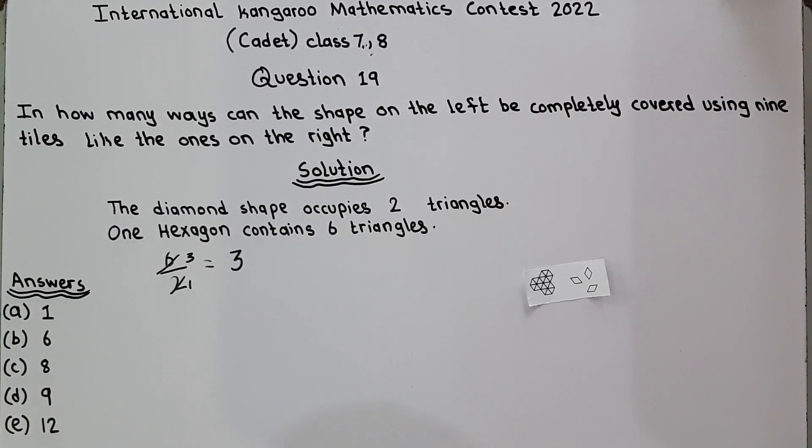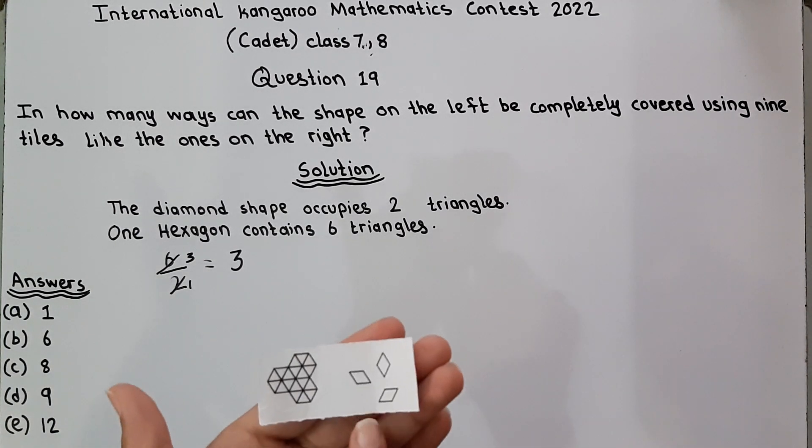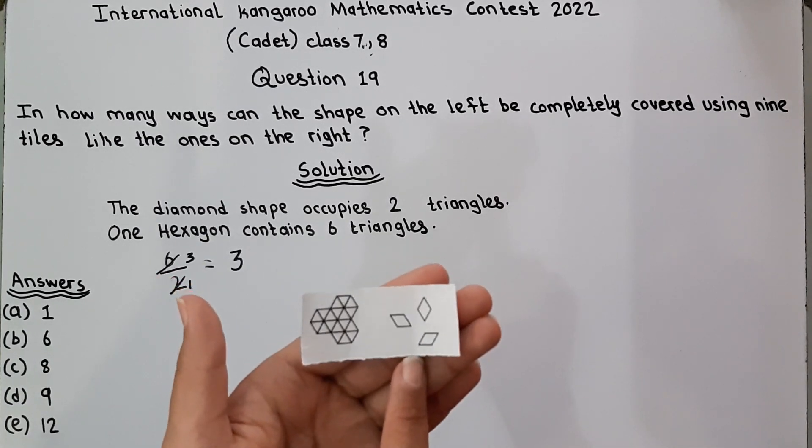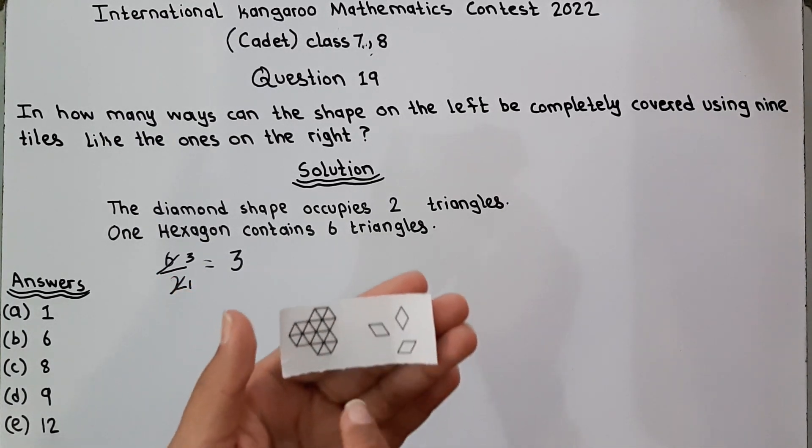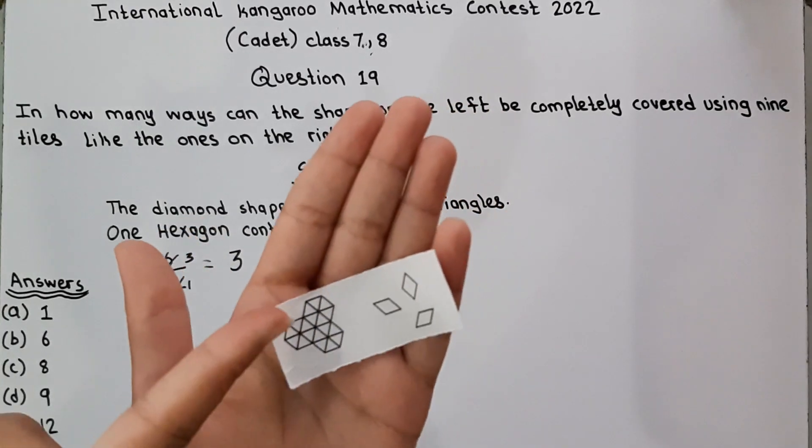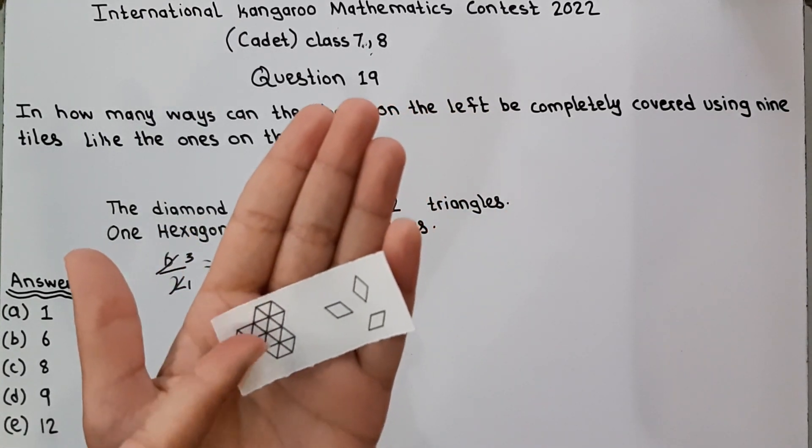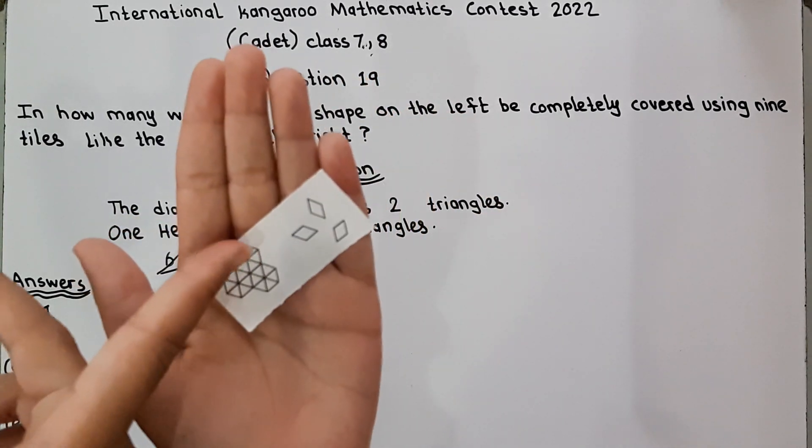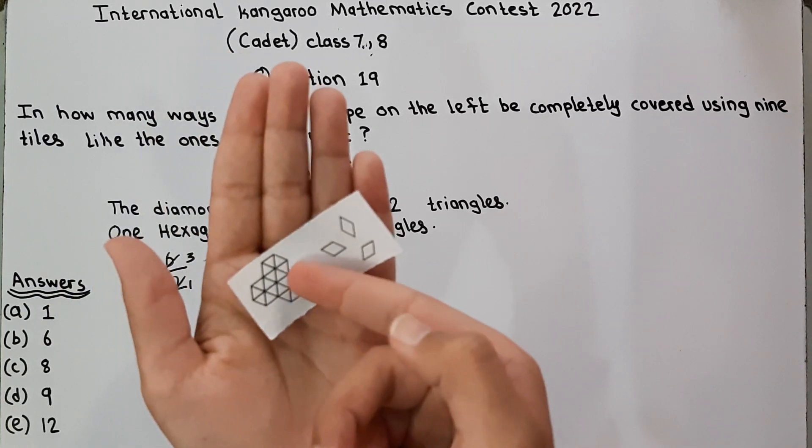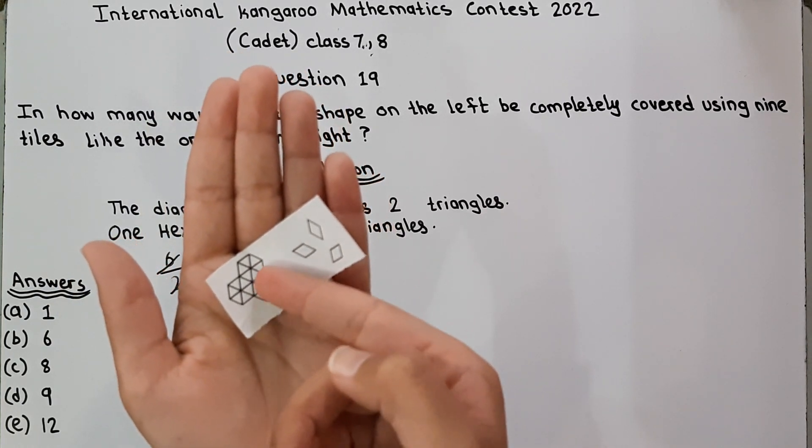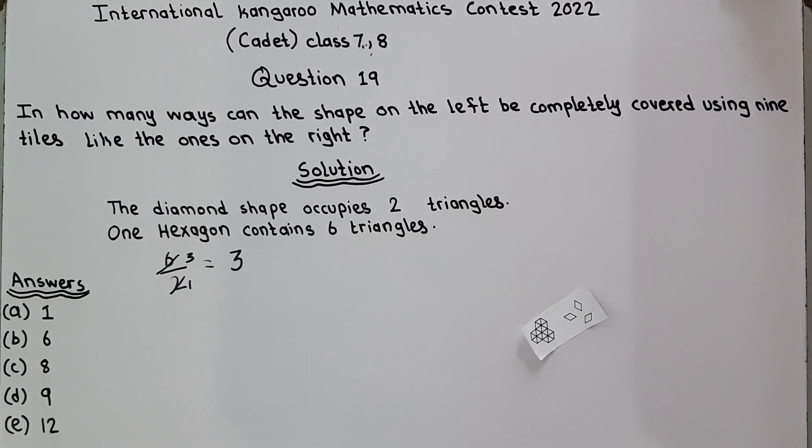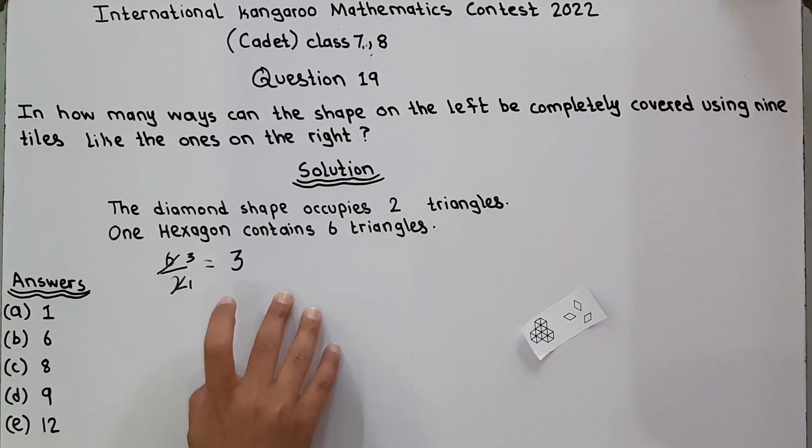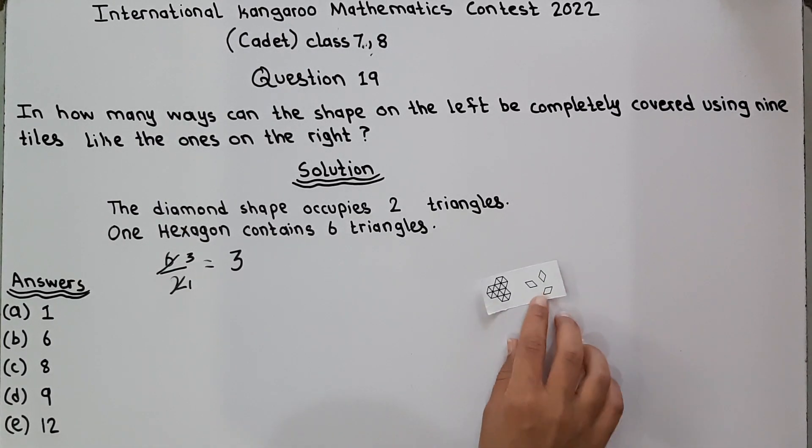Now we know that three diamond shapes like this contains one hexagon, and we can prove this. Look, this one, look this one, look this one - this second and this third, as you can see. So we now know that one hexagon will take three diamond shapes.